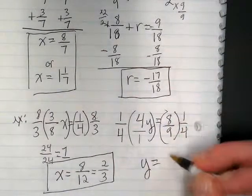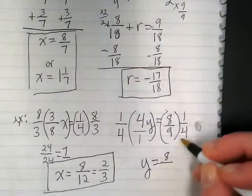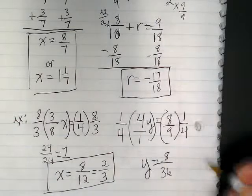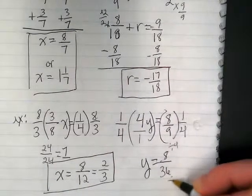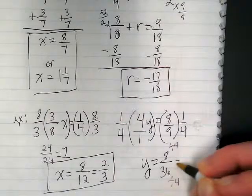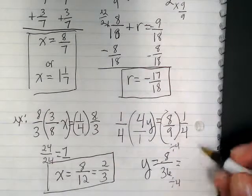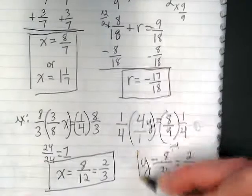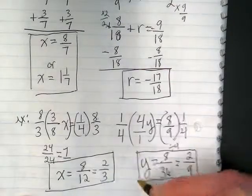We do 1 times 8 is 8. 9 times 4 is 36. I can reduce both of those by 4. So I end up with 2 9ths. So y equals 2 9ths.